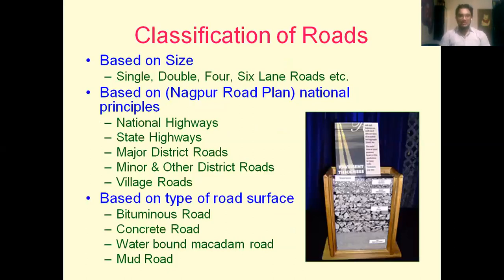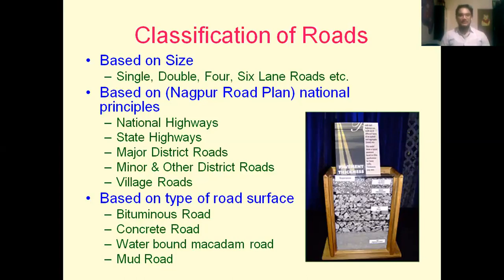Looking at the classification of roads — based on size, there will be a single road, double road, four-lane road, and six-lane road. For example, the Vijayawada Highway is a six-lane road with three lanes on the left side and three on the right. Our outer ring roads are now eight lanes. A lane is a carriageway where vehicles pass, and the minimum lane width is 3.75 meters.